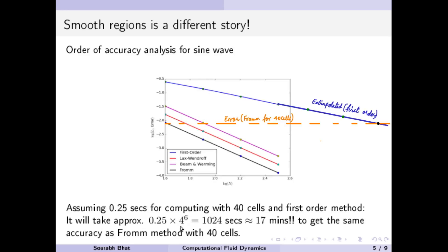So if we require six refinements to reach that error, we will be using 4 raised to 6 times the amount of computation. If we assume that we require 0.25 seconds to do the coarser computation, then to achieve the same accuracy as the second order method we will be needing 1024 seconds, which is almost equal to 17 minutes.